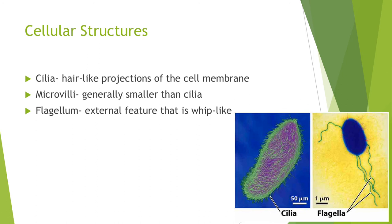The cell also has external structures. Cilia are hair-like projections of the cell membrane. Microvilli are generally smaller than cilia but very similar. The flagellum is an external feature that acts like a whip. As you can see in the pictures at the bottom of the slide, there is a clear difference between these structures. The only cell in the human body that contains a flagellum is the sperm cell.